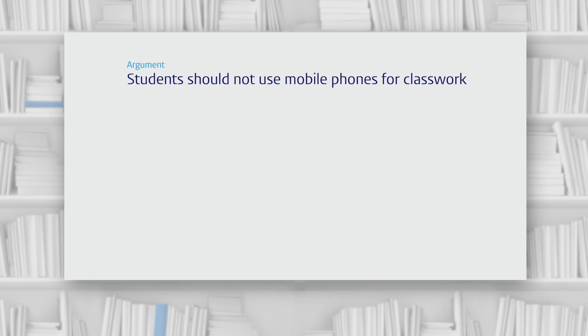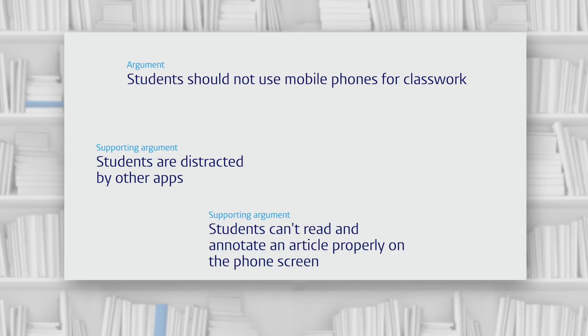Let's look at how we build a logical argument. Let's say that I'm writing an essay where I want to argue the following point: students should not use mobile phones for classwork. I've also collected various arguments that all support this point: students are distracted by other apps; students can't read and annotate an article properly on the phone screen; and students will get lower grades if they use phones in class.